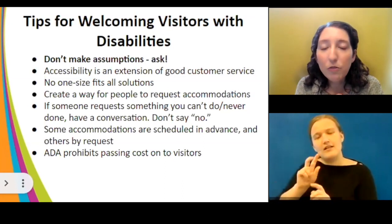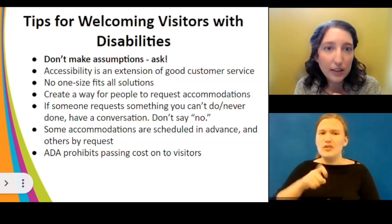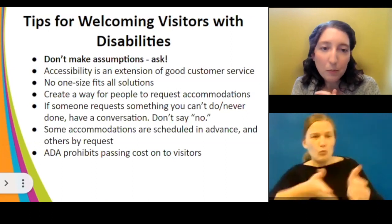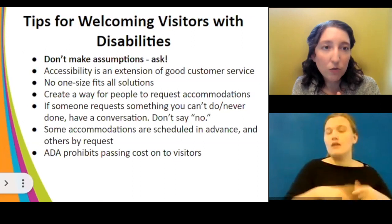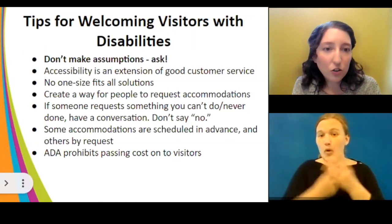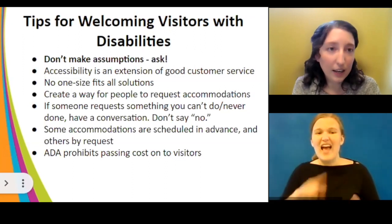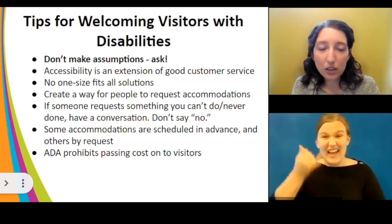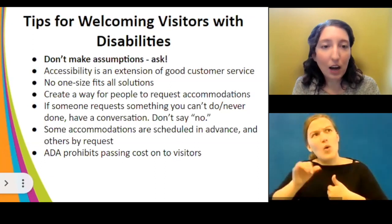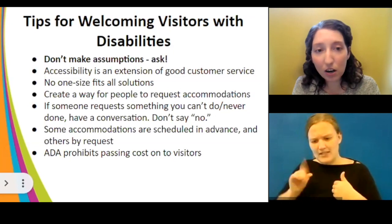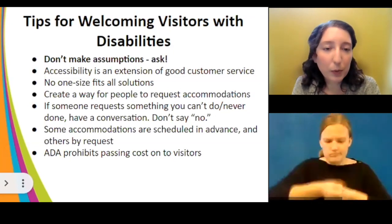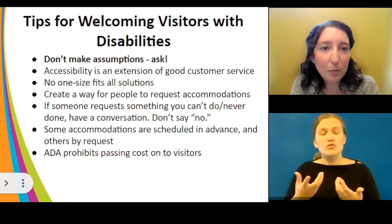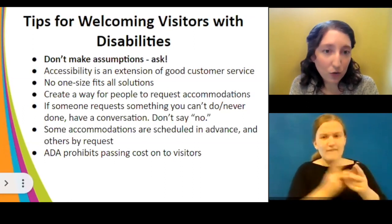Create a way for people to request accommodations — have both an email address and a phone number, since some people are more comfortable communicating by phone. The most logical place for this to live is on the accessibility page of your website. If you don't have one, do a quick inventory of what you offer, identify common issues people with disabilities have at your space, and put that information out there. You don't want people arriving at your venue surprised by an obstacle they weren't expecting.